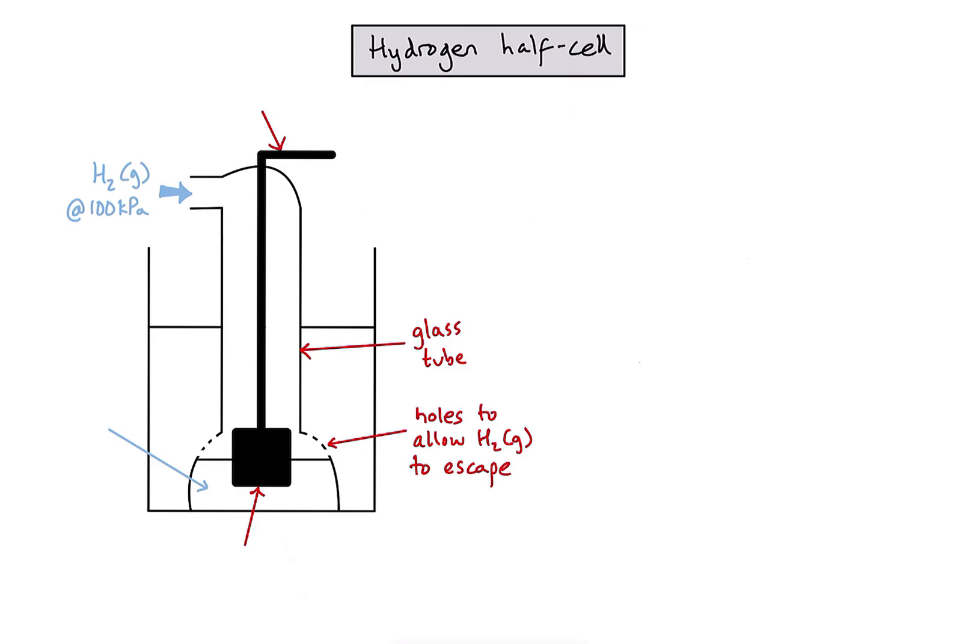Down at the bottom, the blue arrow is referring to a solution containing H-plus ions, so it's an acidic solution. And we want a concentration of H-plus ions of exactly one mole per decimetre cubed, which is the concentration we require for standard conditions.